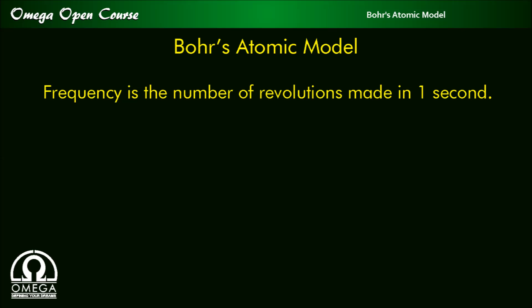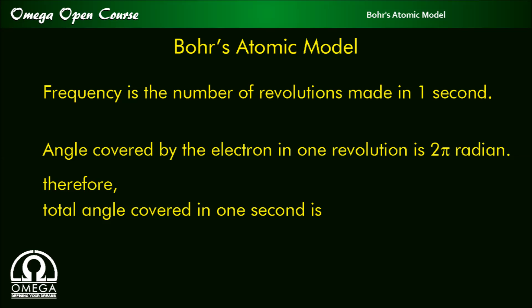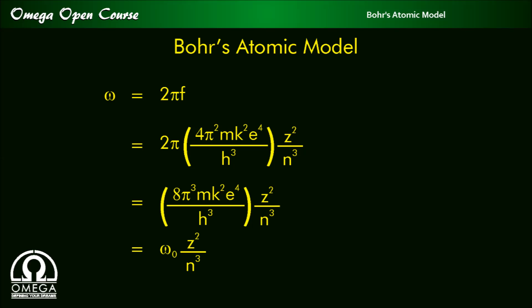Frequency is the number of revolutions made by the electron in one second. The angle covered by the electron in one revolution is 2π radians. Therefore, the total angle covered by the electron in one second is equal to 2πf, which equals 2π × (4π²mk²e⁴ / h³) × (z² / n³), which equals ω₀ × z²/n³, where ω₀ is equal to 8π³mk²e⁴ / h³.